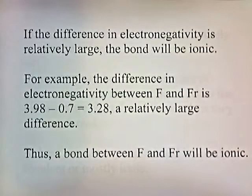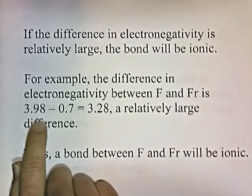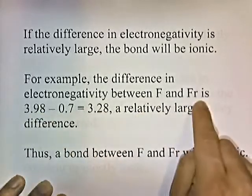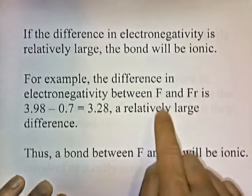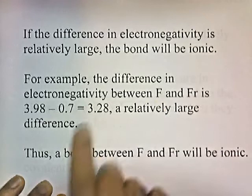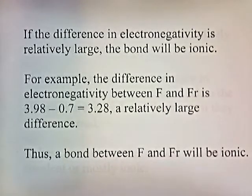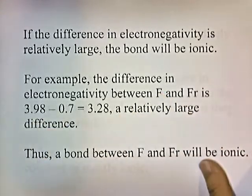If the difference in electronegativity is relatively large, the bond will be ionic. For example, the difference in electronegativity between fluorine and francium is 3.98 minus 0.7. Fluorine has a strong electronegativity of 3.98, while francium has a relatively weak one. There is a large difference in drawing strength between these two — fluorine is much stronger than francium. So a bond between fluorine and francium will be ionic, and the electrons are going to be transferred to the fluorine.